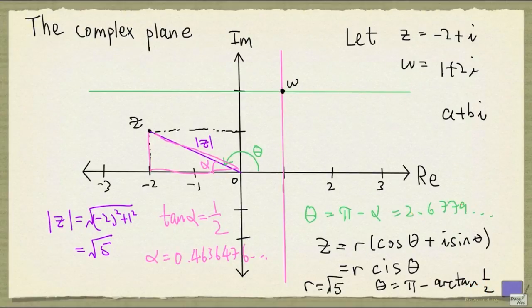Now to convert a complex number from polar form to rectangular form, all you have to do is just expand this expression here. So the real part is given by r times cos theta. You can work that out numerically. And then the imaginary part is r times sin theta, which again you can work out numerically.